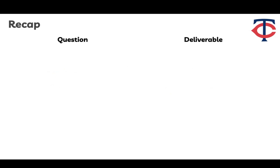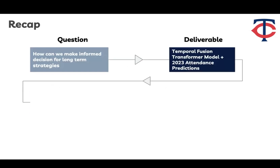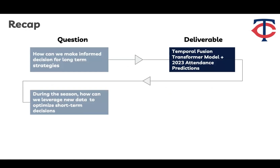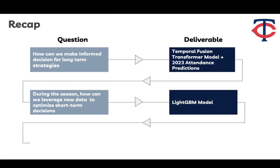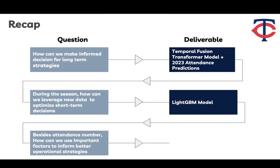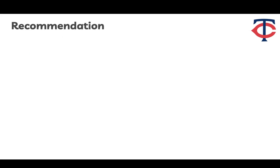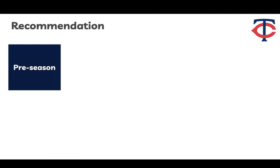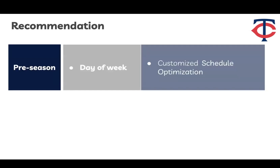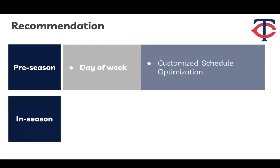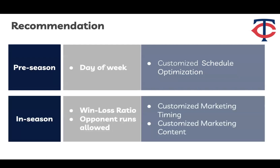Here's a quick recap of our work. For the pre-season model, we deliver the Temporal Fusion Transformer and 2023 attendance predictions. For the in-season model, we deliver the LightGBM model for each of the 30 teams. For feature importance, we deliver partial dependence plots for all 30 teams with recommendations. Our recommendations include using calendar features like day of the week for schedule optimization per team, and using features like win-loss ratio and opponent runs allowed to customize marketing timing and content for different teams.